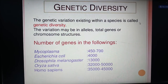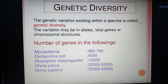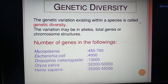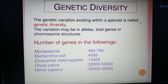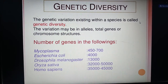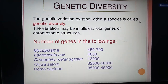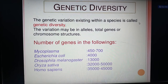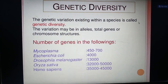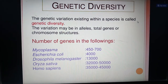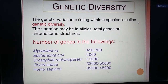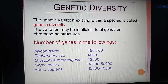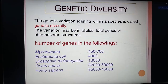Genetic diversity refers to the genetic variation existing within a species. Even though we are humans, genetically we have many different forms because we have a large number of genes. The variations may be in alleles, total genes, or chromosomal structure. For example, Mycoplasma has 450 to 700 genes, Escherichia coli around 4,000, Drosophila melanogaster around 13,000, Oryza sativa 32,000 to 50,000, and Homo sapiens 35,000 to 45,000 genes.